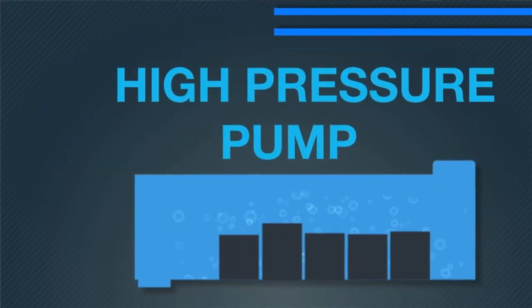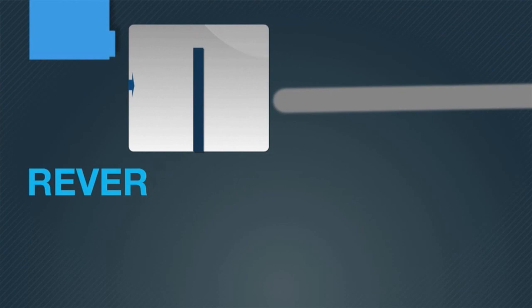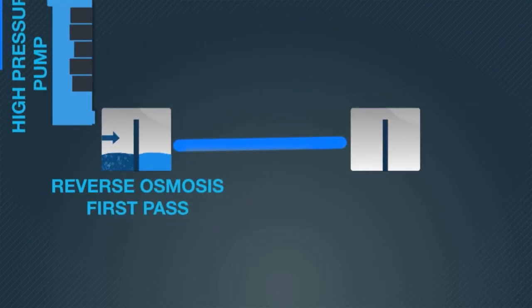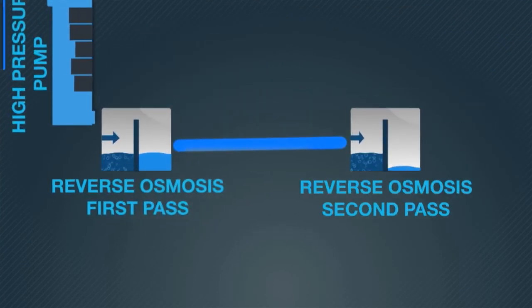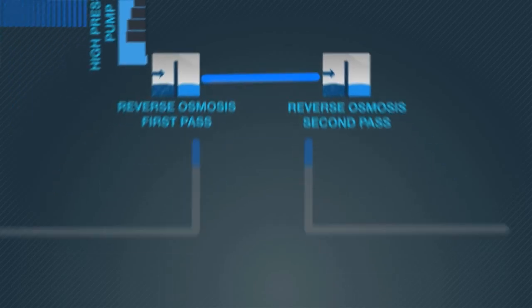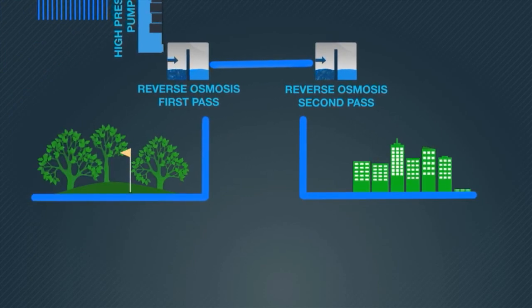This process, known in the industry as reverse osmosis, sees the wastewater pushed through filtration units that separate the salt from the water. The process includes advanced disinfection and salt reduction to ensure the quality is suitable for customer use.